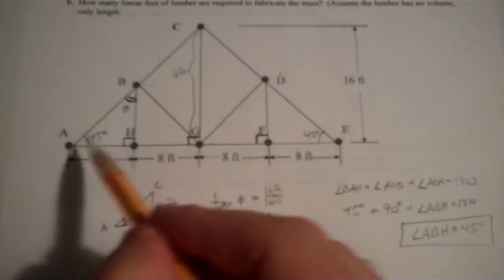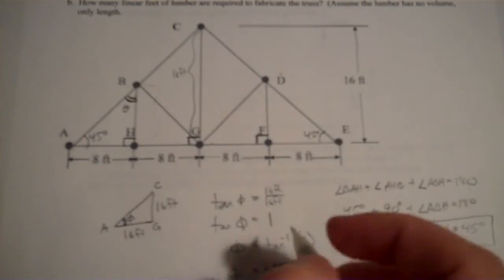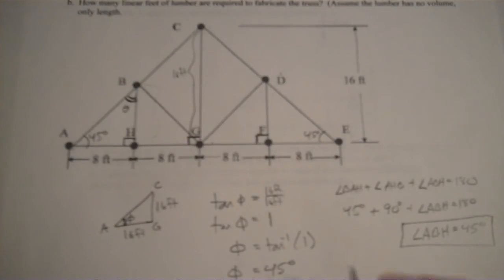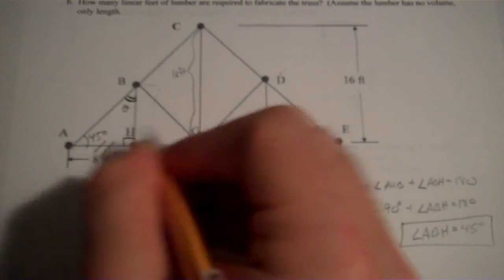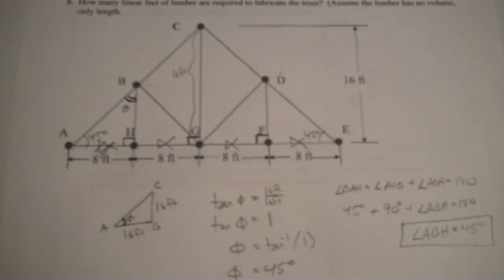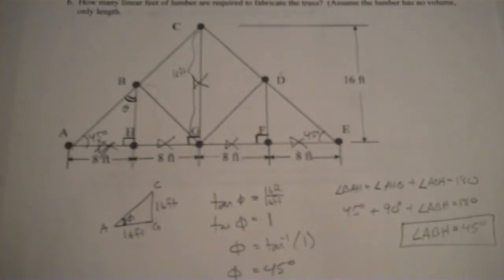I need to add up the lengths of each piece. I have 8 feet, 8, 8, 8 — so 8 feet across the bottom four sections. Segment AE is going to be equal to 8 times 4, or 32 feet. And CG — we've already been told that's 16 feet. So 16 feet; I'll cross that off.